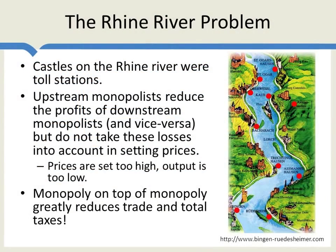We can get an intuitive understanding of the double marginalization problem by looking at the Rhine River. Tourists love to sail down the Rhine River because every few miles there are these beautiful castles. These castles, however, were not the vacation homes of the rich. They were actually toll booths, put there in order to charge people coming down the river.